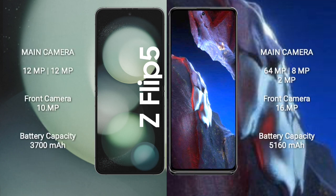Samsung Galaxy Z Flip 5 has a dual camera setup with 12MP plus 12MP and a 10MP front camera. Xiaomi Poco A5 Pro has a dual camera setup with 64MP, 8MP plus 12MP, and a 16MP front camera.